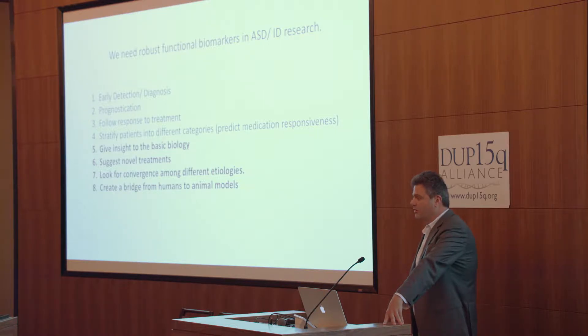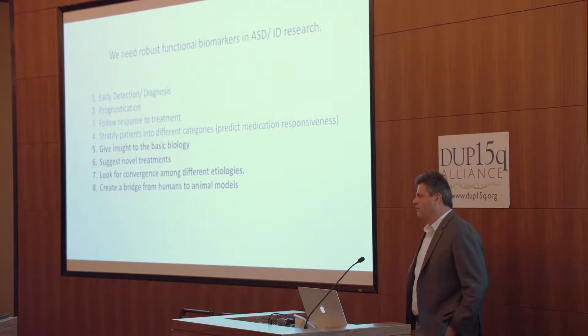You can look for novel treatments. And one important thing is that we have a need for convergence in studying ASD. We have a large number of genetic causes that are very distinct pathways, but the overall phenotype is somewhat similar. So where do all these pathways converge? Maybe if we can find biomarkers that converge, that will help us. And importantly, it can create a bridge from human research to animal research, and this is where we came in.